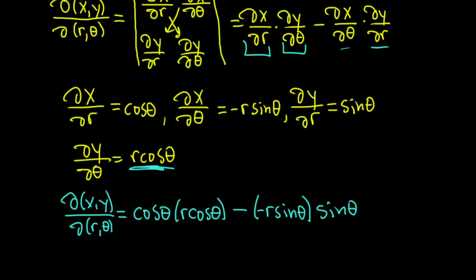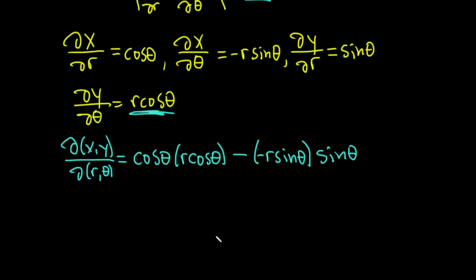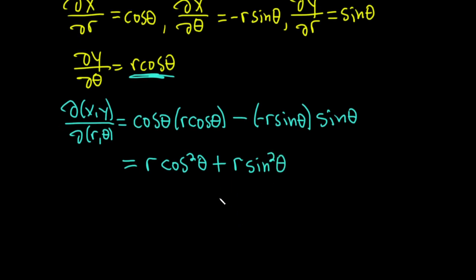Let's just keep going. We're almost done and we'll have the actual answer. So this is equal to r times cosine times cosine is cosine squared theta. And then negative and negative is positive here. So we get plus r sine times sine is sine squared theta. And you notice that we actually have a common factor here. We can pull out an r. So this is r times parentheses cosine squared theta plus sine squared theta.